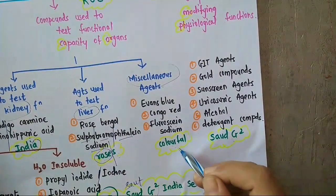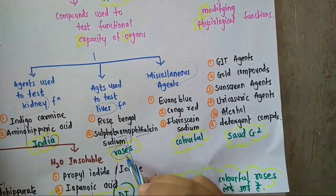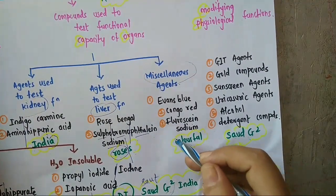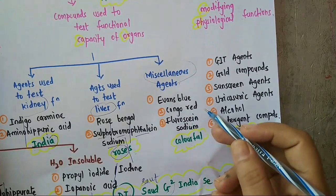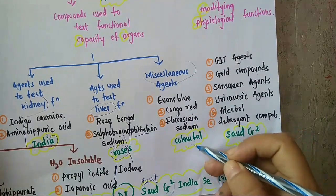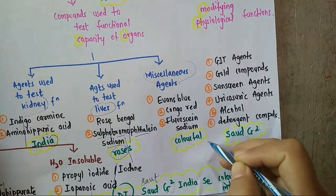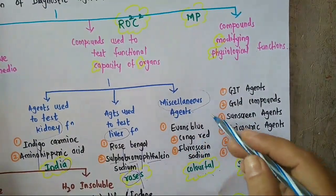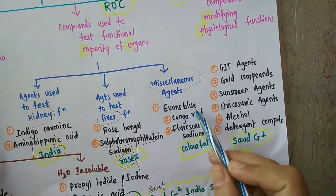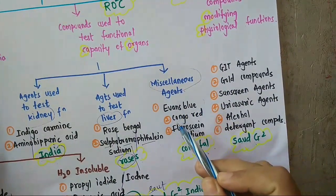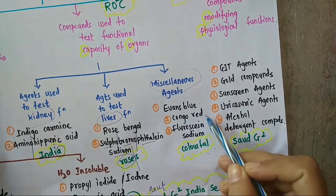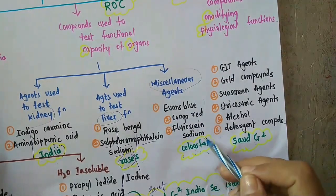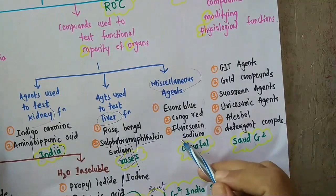'Colorful' — why is it written colorful? Because in the miscellaneous category, all colors are there. First is Evans blue, second is Congo red, and there is also fluorescein sodium. So the classification is MP ROC — Madhya Pradesh rock.